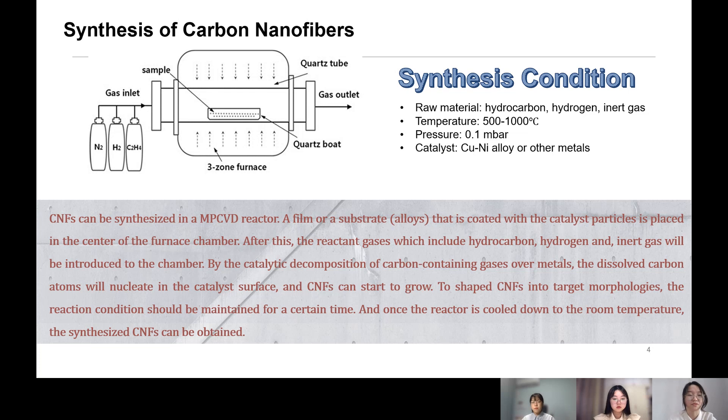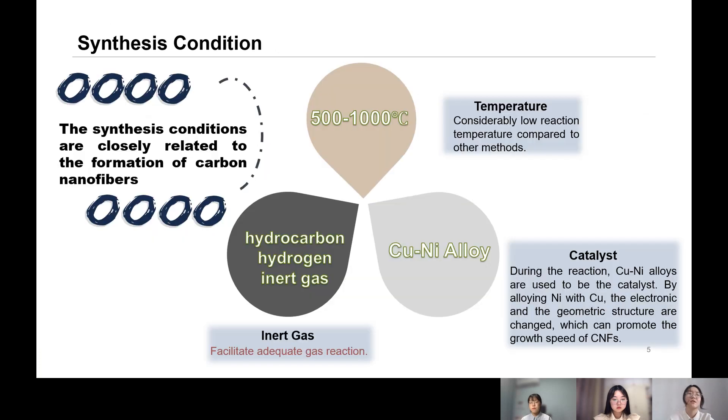By maintaining the reaction condition for a certain time, we can get the carbon nanofibers. Here we use the raw materials hydrogen, hydrocarbon, and inert gas. The temperature is set to be 500 to 1000 degrees Celsius, the pressure is 0.1 millibar, and the catalyst can be copper-nickel alloy or other metals.